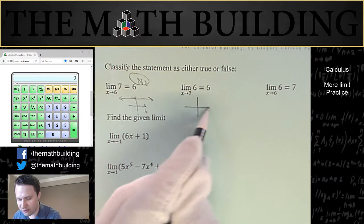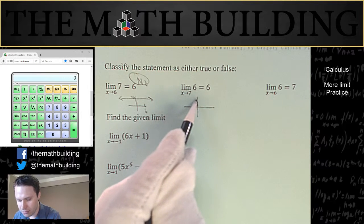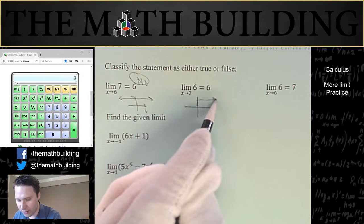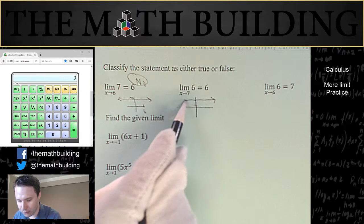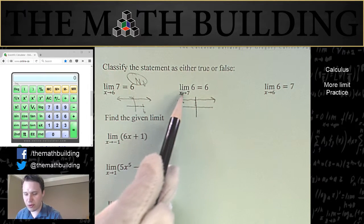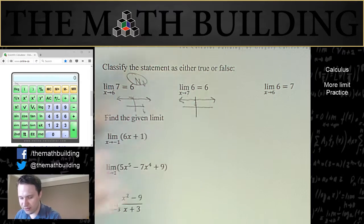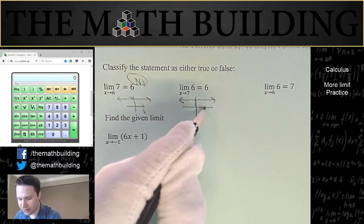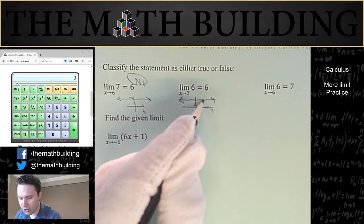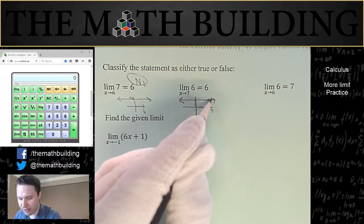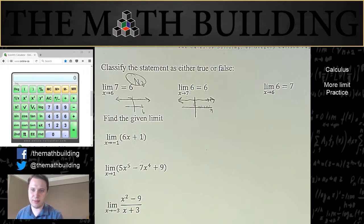So it's 6 everywhere. And so as x approaches 7, is our limit equal to 6? And the answer is yes, because over here at 7, our limit approaches the same value in both directions, and that limit is equal to 6.